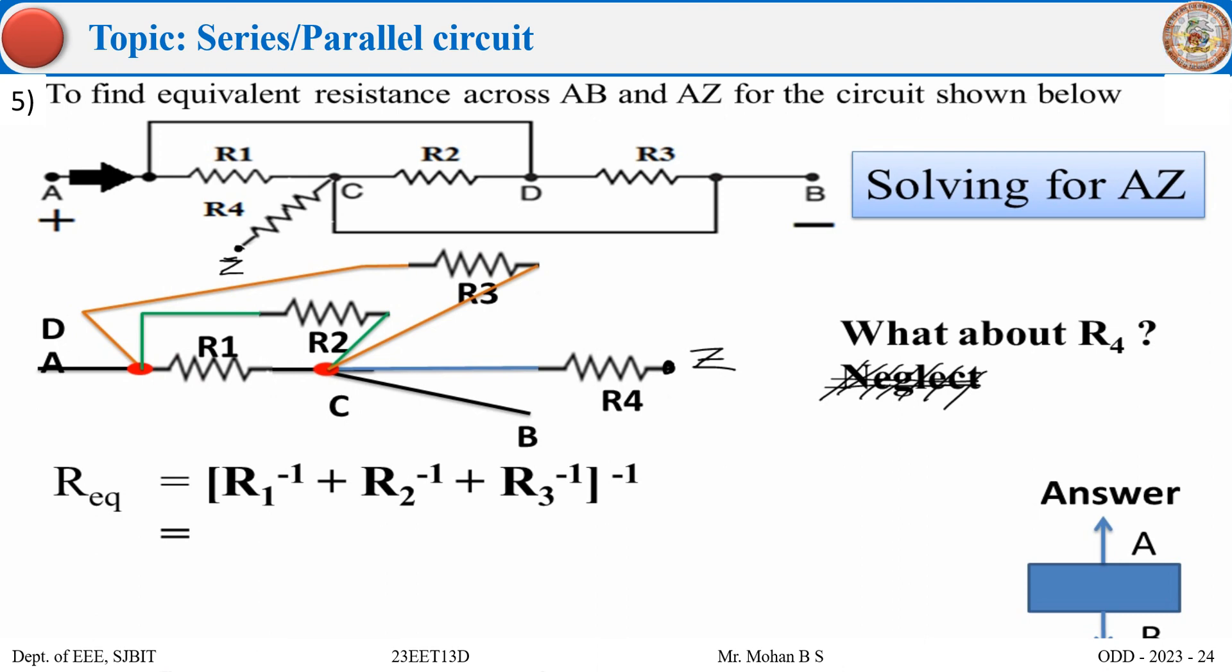Until last step across A and B, R1, R2, R3 are parallel. Are they still the same? Yes, they are still parallel even between A and Z also. And after that we have to add R4.